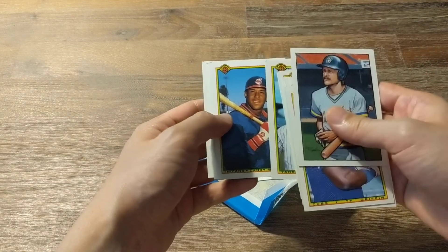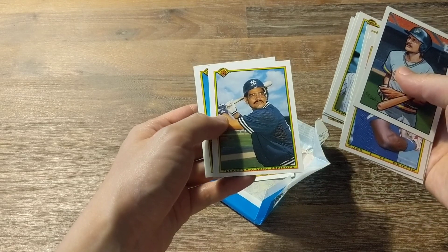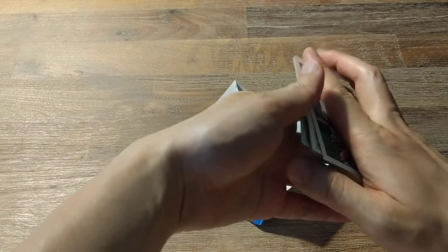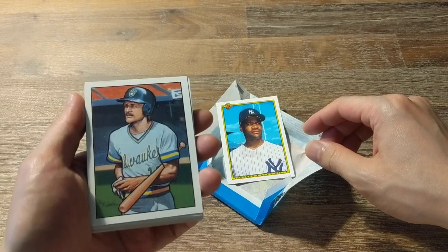Candy Maldonado, Mookie Wilson, Alvaro Espinosa, and Mark McGwire. So still no good rookies, but I think I needed a lot of cards in this pack.